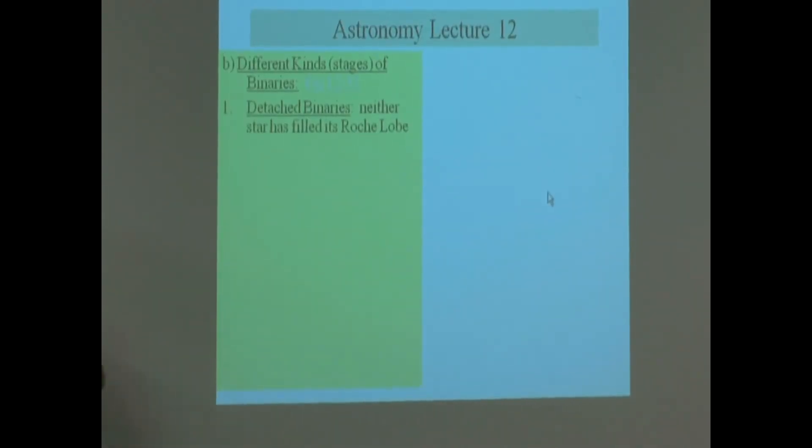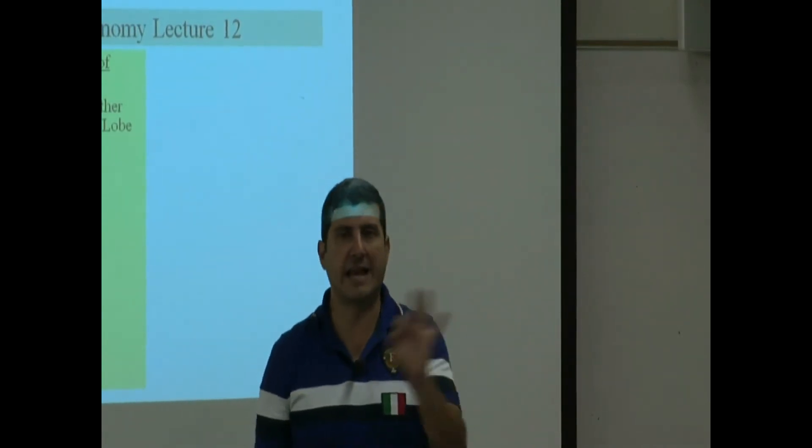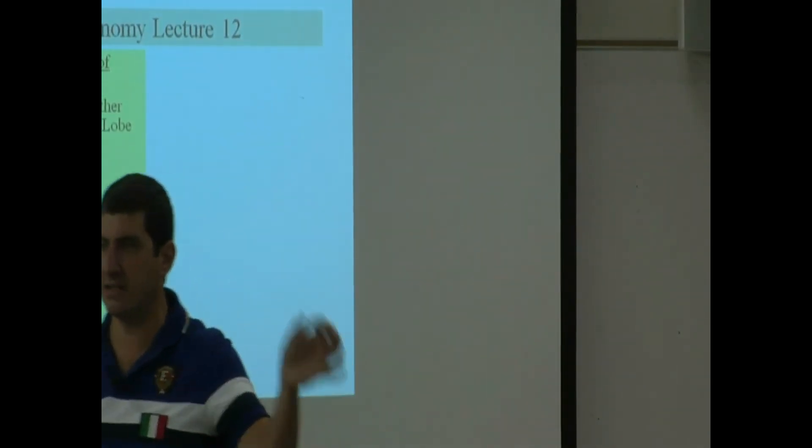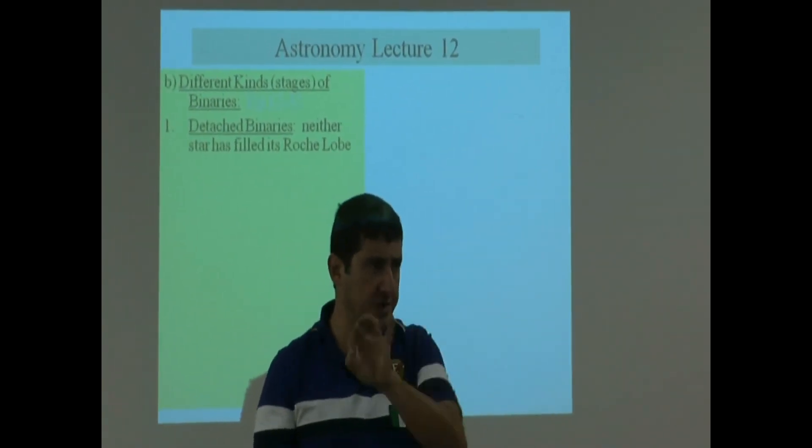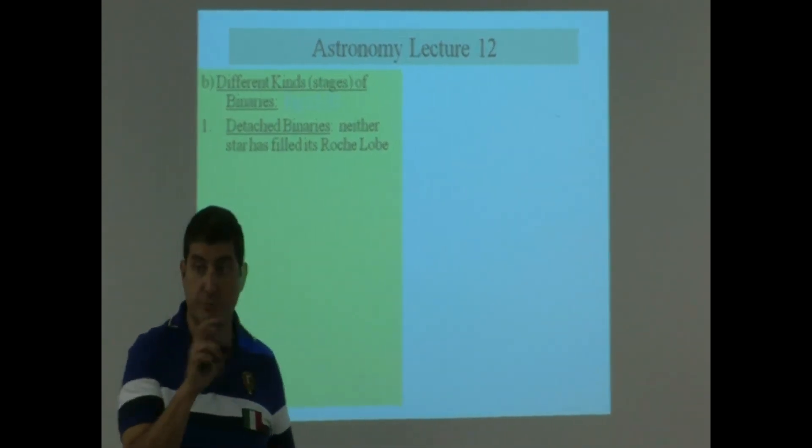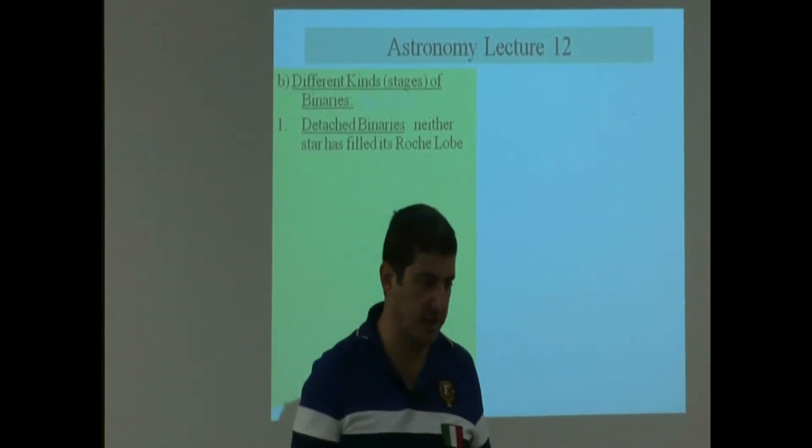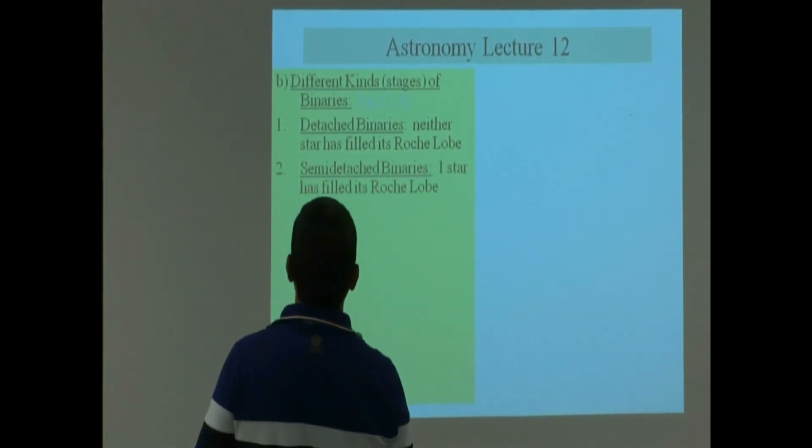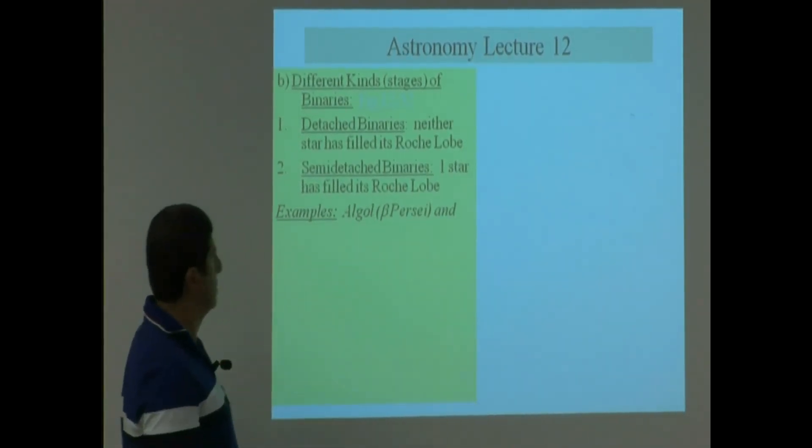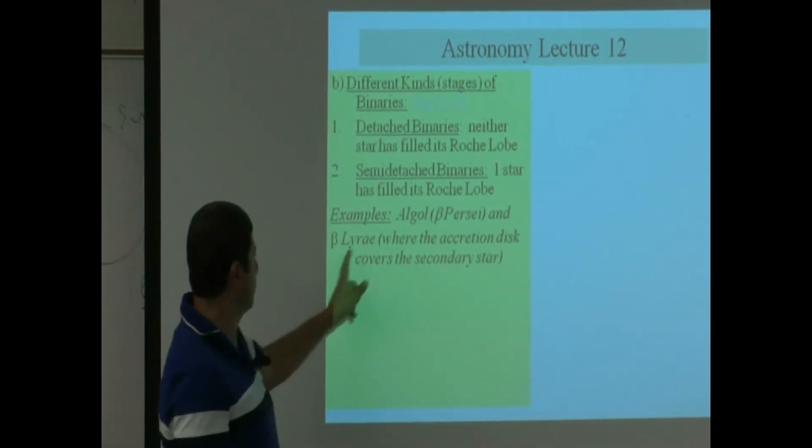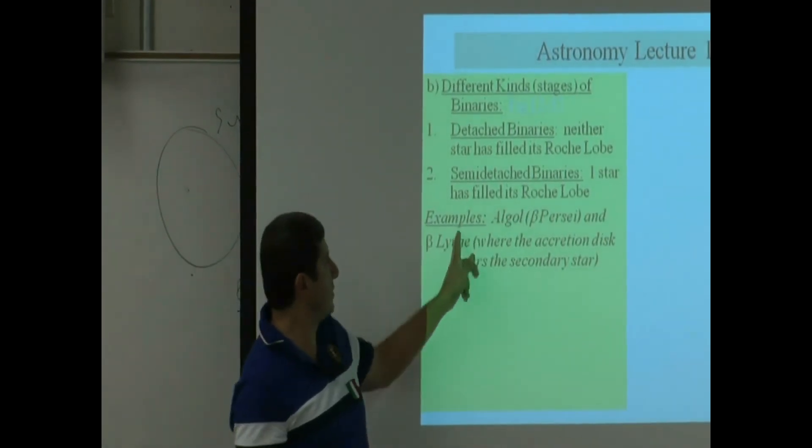In this lecture, lecture 12, you're going to have a lot of kinds of categories of things that you have to know. And then there's going to be examples, like example of this is this, example of this is that, example of that is that. And to study for the test, you can make, on your notes, you can make a portion where you are putting all the examples. So if I ask you on the test, what's an example of this? You can have an idea. What's an example of that? You could know. So example of a semi-detached is the second brightest star in Perseus, Algol, Beta Persei, and the second brightest star in Lyra, where the accretion disk covers the secondary star. So these are examples of semi-detached.